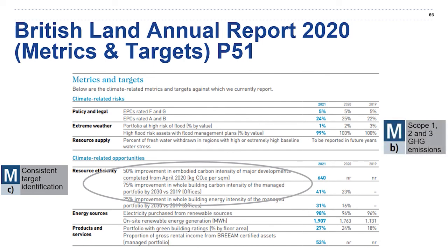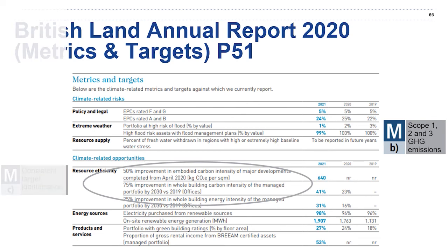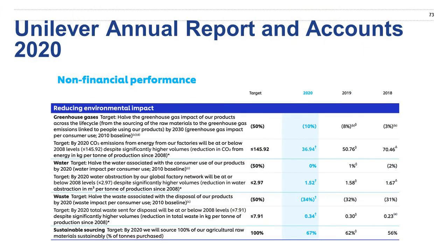Including scope one, two, and three emissions would have been great as well, which likely is somewhere else in their report, but not in this excerpt. Just as an example of how to provide some targets, we have an example here from Unilever, which gives alongside their trend lines their target of where they're heading towards — not just the past, but also future-looking information. Thank you.